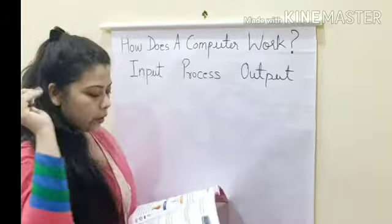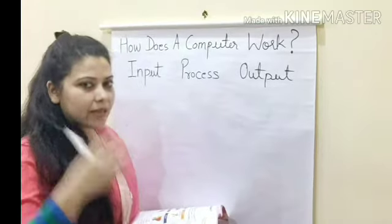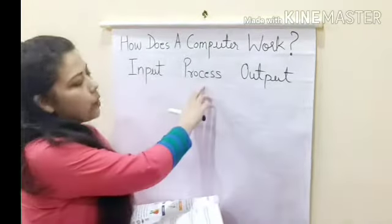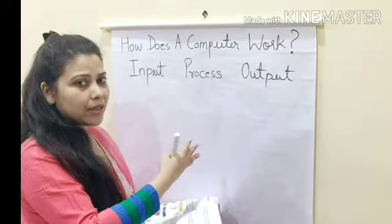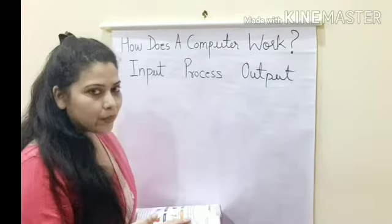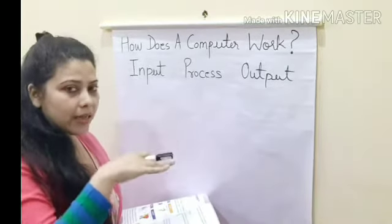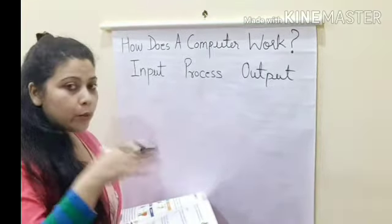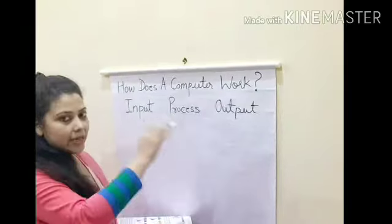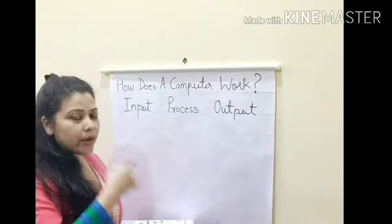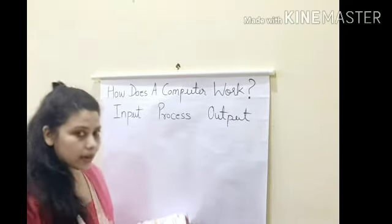Next we come to process. When we enter all the instructions, pictures, letters, and numbers into the computer, the work of processing starts. Which part of the computer does all the processing? Yes — the CPU. Working on the data is called processing. The CPU works on the data and does all the thinking and calculation.